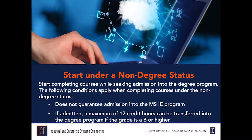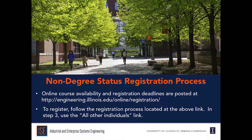You can start completing courses as a non-degree student while seeking admission into the degree program. The following two conditions apply when completing courses under non-degree status: it does not guarantee you admission into the MSIE degree program, and if admitted into the program, a maximum of 12 credit hours can be transferred if the grade is B or higher. To start as a non-degree student, you just need to register for a course by the deadline for the upcoming semester.